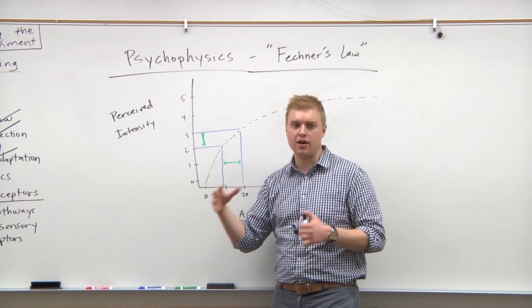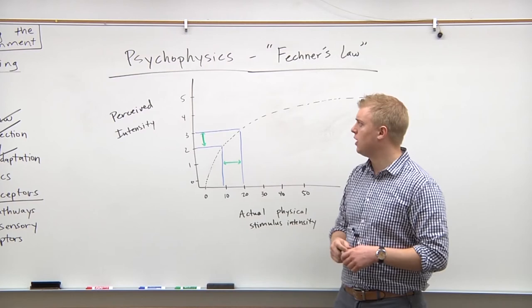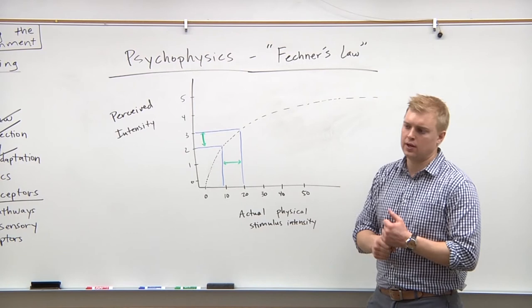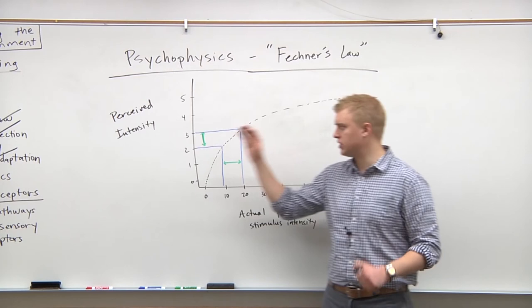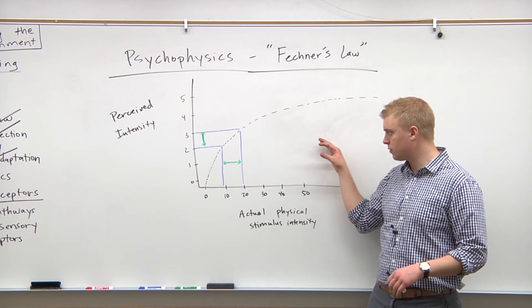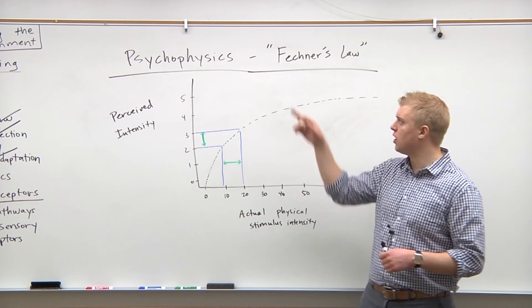So that's psychophysics. We're not going to jump too far into detail on that. I doubt the MCAT would give you anything too crazy, but if you know this relationship—that perceived intensity, how our brain interprets stimuli, is a logarithmic relationship to the actual physical stimulus—then you should be good on Fechner's law and psychophysics questions. Cool.